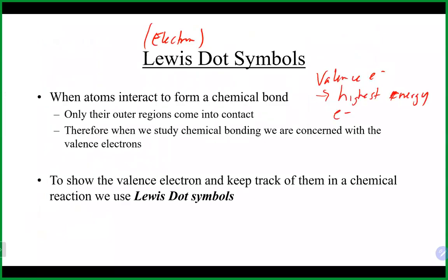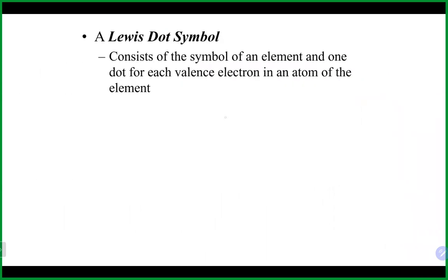Lewis dot symbols use the actual symbol for the element with one dot to represent each valence electron. The main rule is no more than two dots per side. With two dots per side and four sides, that is a maximum of eight electrons.